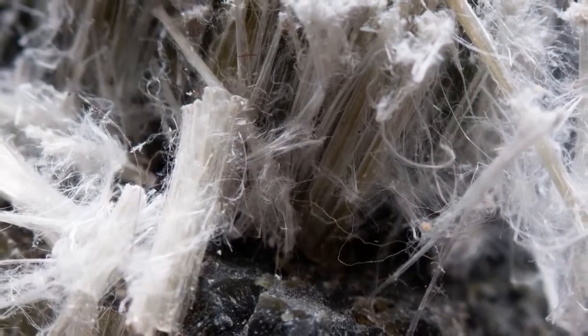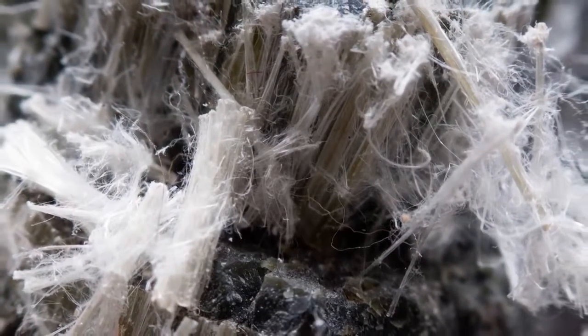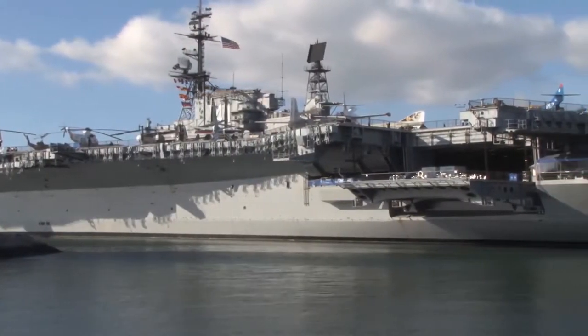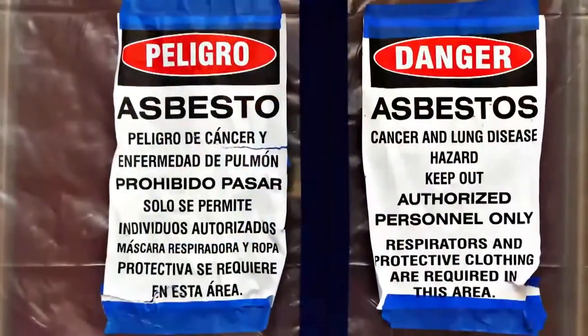We all know that asbestos is toxic, but many people wonder how asbestos harms the human body. The truth is, scientists are still trying to figure out exactly how asbestos causes harm, but researchers do have several theories, and all involve heavy exposure that leads to genetic damage.